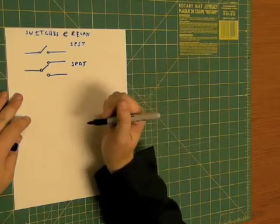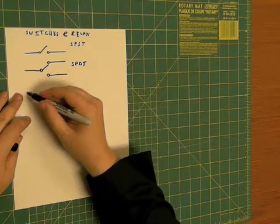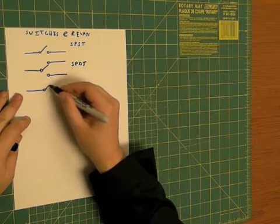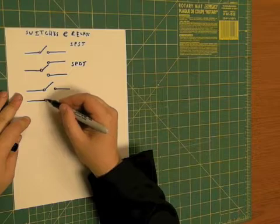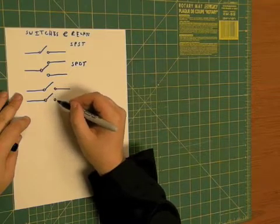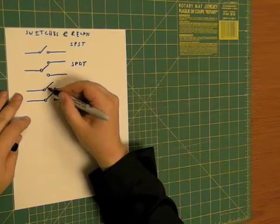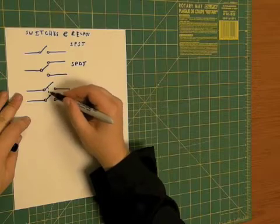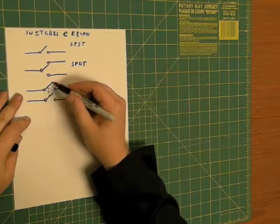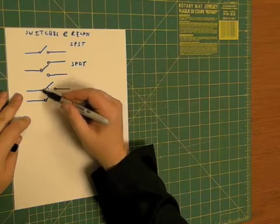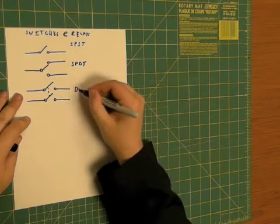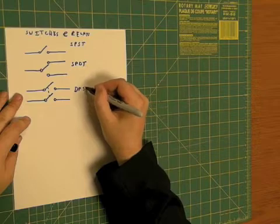You can also have a double-pole, single-throw switch. The dotted line here means that basically these two poles aren't connected to each other. And so, thus, when you push this down, two circuits are connected. Again, that's double-pole, single-throw.